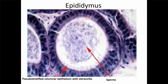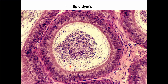This is the epididymis, in which you can see sperms in the lumen. The epithelium of the epididymis is pseudostratified columnar epithelium with stereocilia. It is actually one layer but it looks stratified to our eyes. You can see this cilia, which is called stereocilia, and the sperms in the lumen.